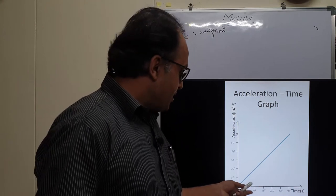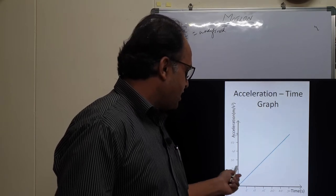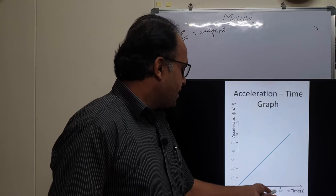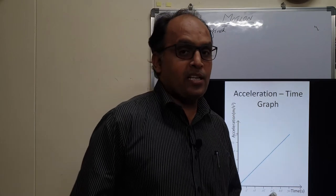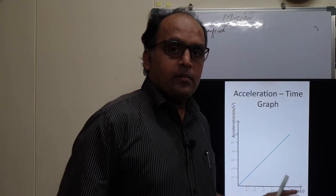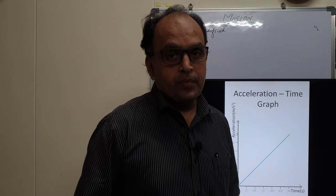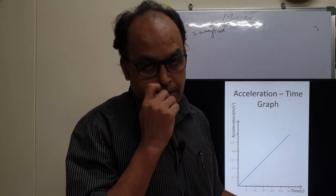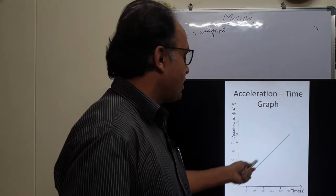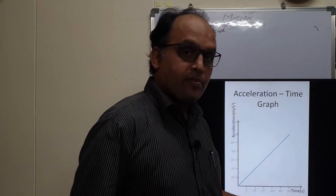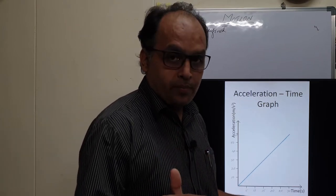In this graph, after 5 seconds the acceleration is 10 meters per second squared, after 10 seconds it is 20, after 15 it is 30, after 20 it is 40, after 25 it is 50, and after 30 it is 60. The acceleration is changing with time, so the body is moving with non-uniform acceleration. When the graph is a straight line passing through the origin in the acceleration-time graph, both the acceleration and velocity of the body are non-uniform.